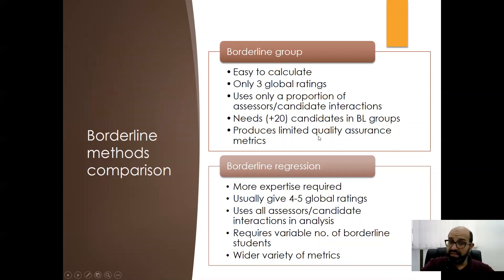It produces a limited quality assurance metrics. So you cannot really evaluate the exam using the borderline group. There are only three global ratings so it is easier for the assessors. You will only use a proportion of the interactions.